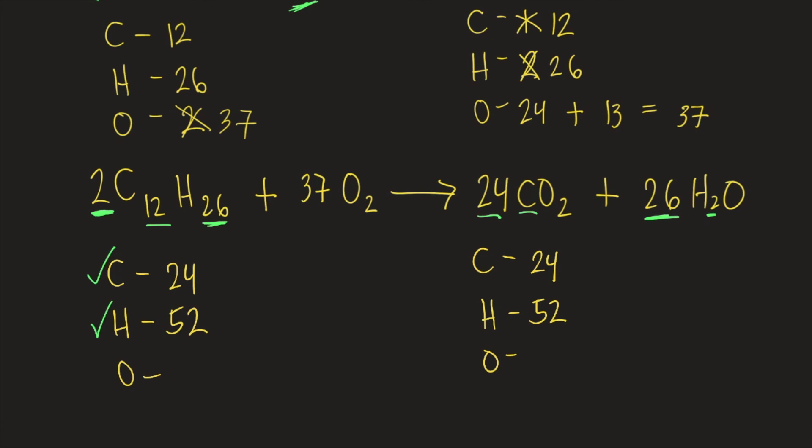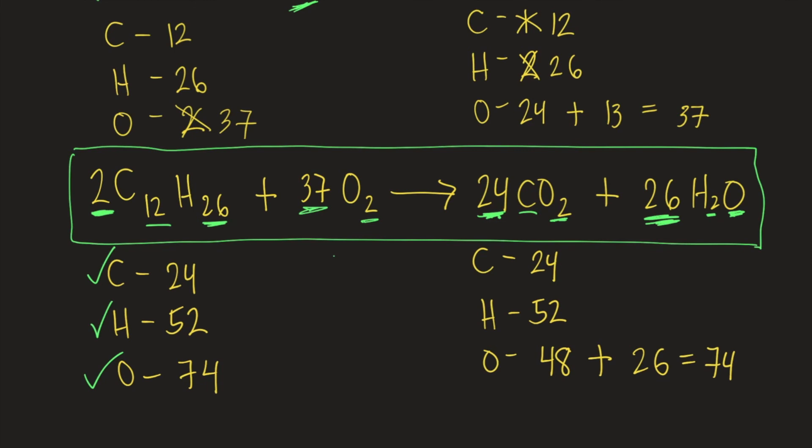Then let's move on to oxygen. On the right side, we have 37 times 2, that's equal to 74. On the right side, we have 24 times 2, that's equal to 48. 48 plus 26 times 1 is 26. 48 plus 26, that is also equal to 74. So oxygen is also balanced. Therefore, the answer to this question is this one. The balanced chemical reaction for the combustion of dodecane is 2C12H26 plus 37O2. The products are 24CO2 plus 26H2O.